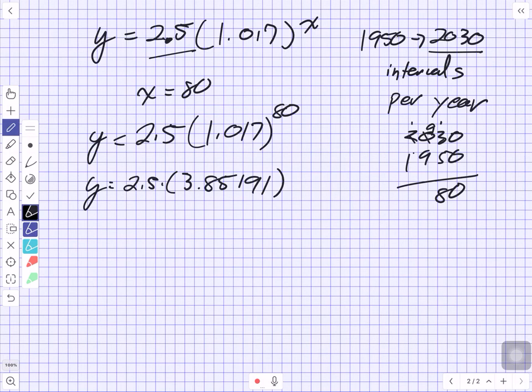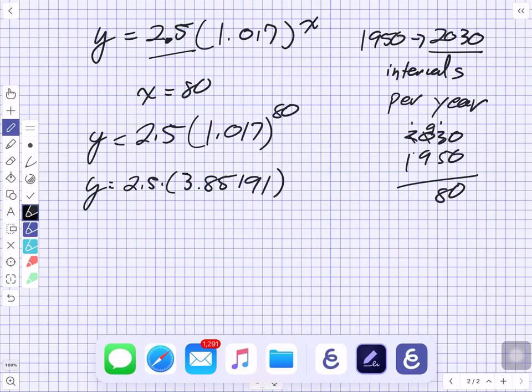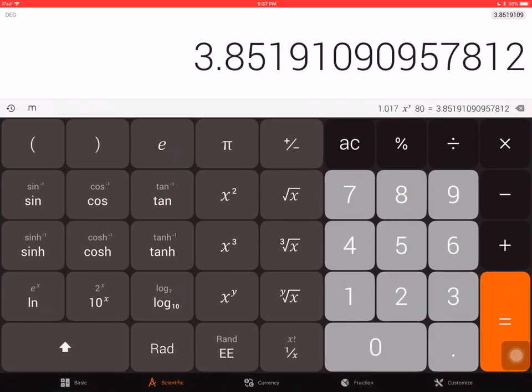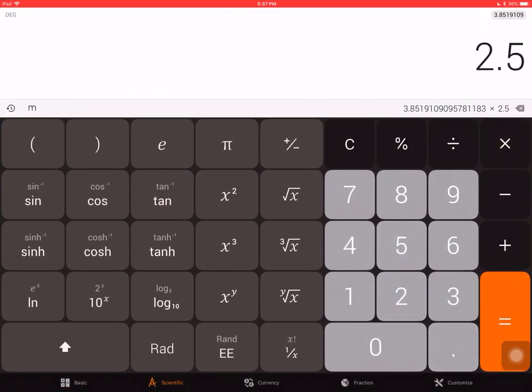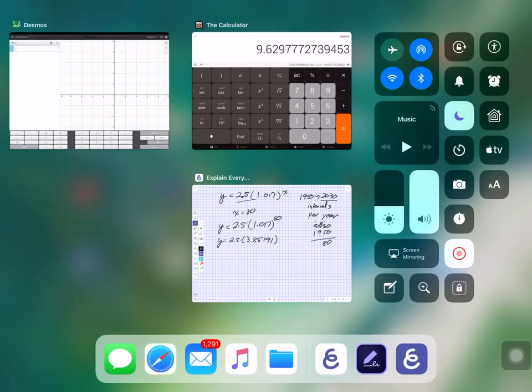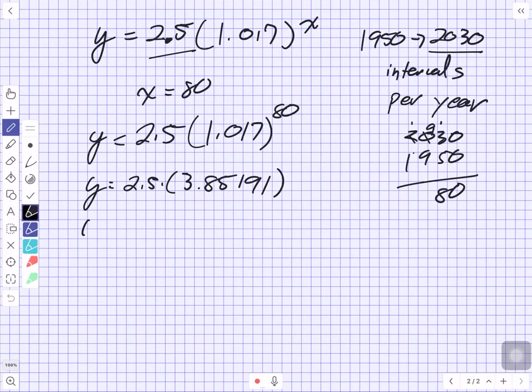It becomes y equals 2.5 times 3.85191. Now that we have this bracket, we're going to multiply these two values together. Let's get back to our calculator, take this value, multiply by 2.5, we get 9.63. Y is equal to 9.63. Is that the population? There's going to be 9.63 people in 2030?